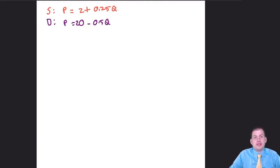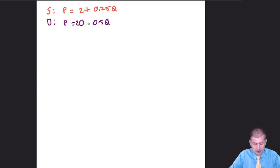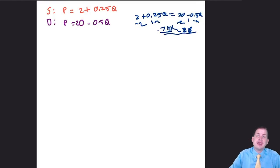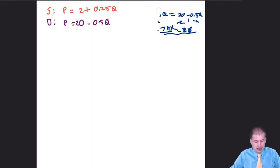Just based on these two formulas we should be able to figure out everything else. We're going to start by sticking this in Desmos, which will show us where they cross. We could do the algebra — setting 2 + 0.25Q = 20 - 0.5Q, solving to get 0.75Q = 18 — but that's a hassle. Desmos makes it so we don't need to do that.